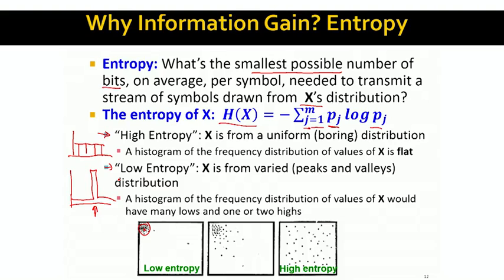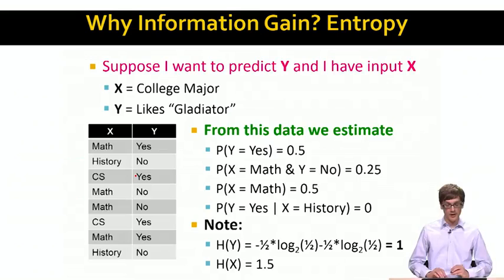Basically, entropy measures how uniform or how spread out a given distribution is. If the entropy is low, then the distribution is very peaked — it almost always takes the same value, so distributions with low entropy are very easy to guess.